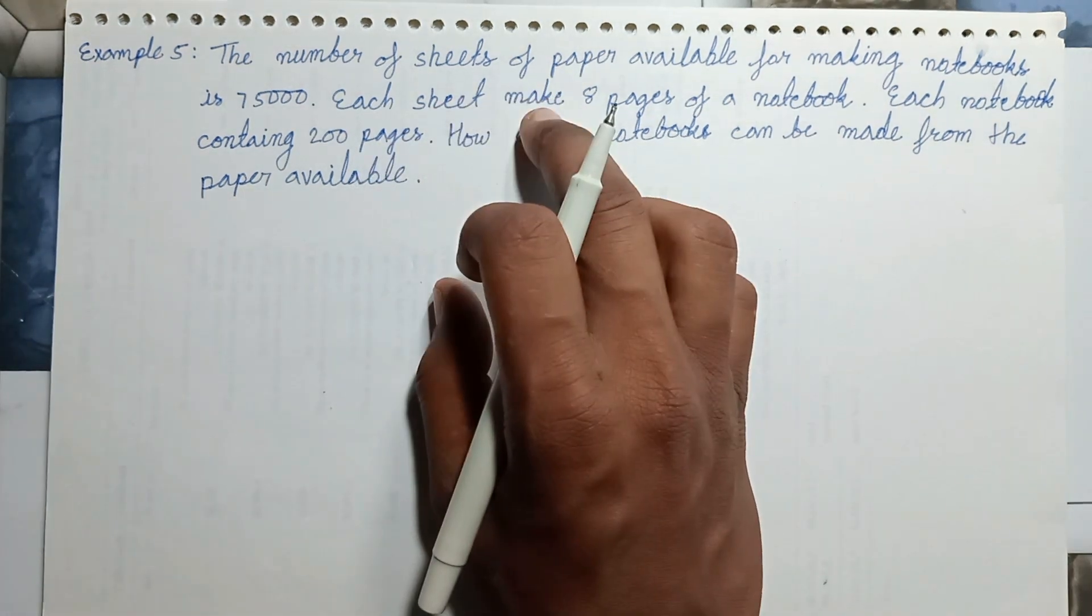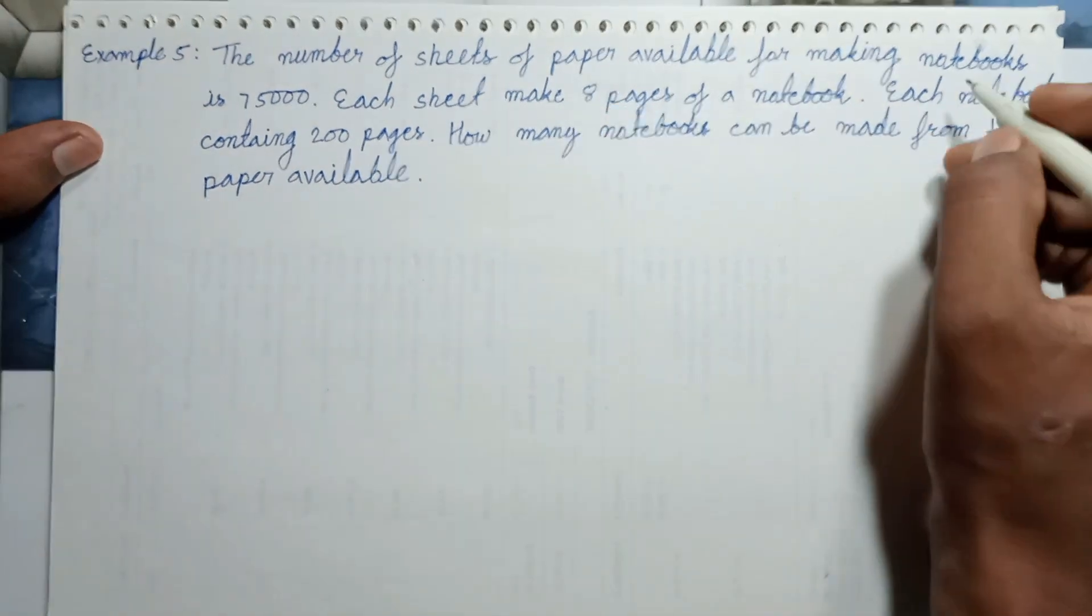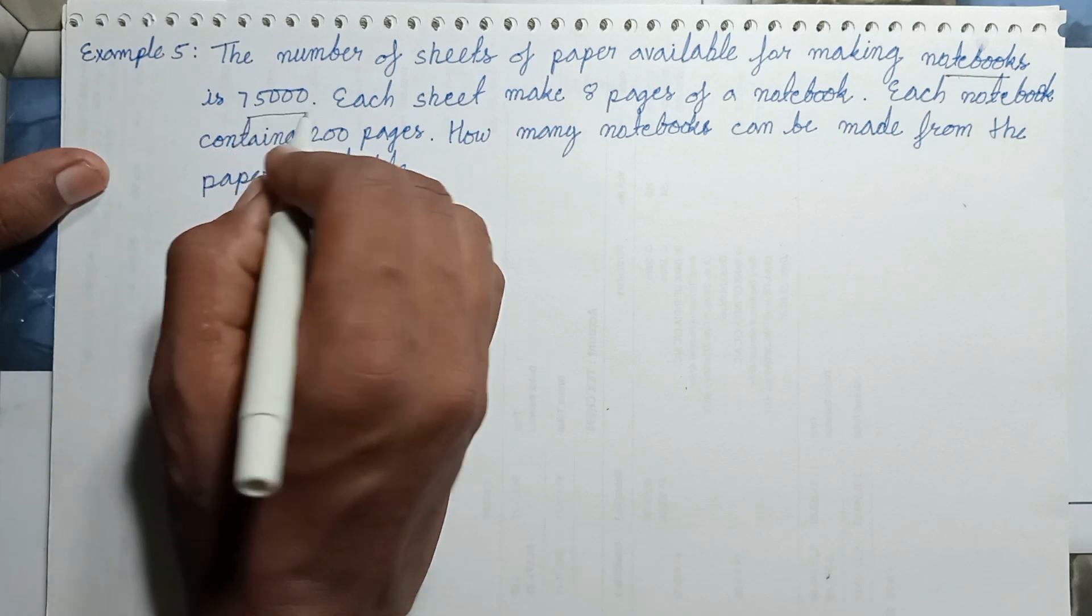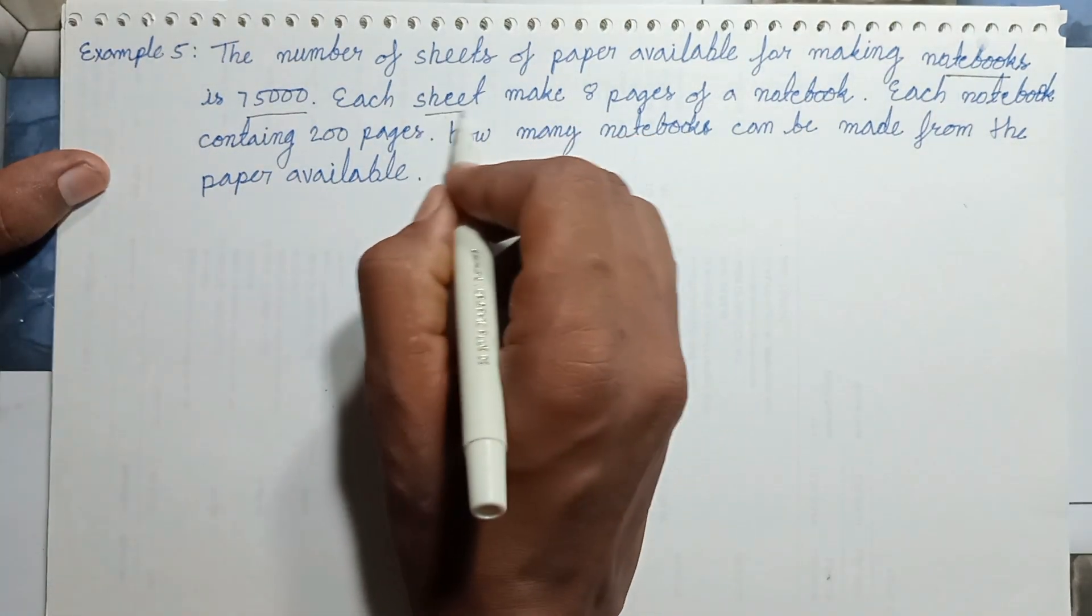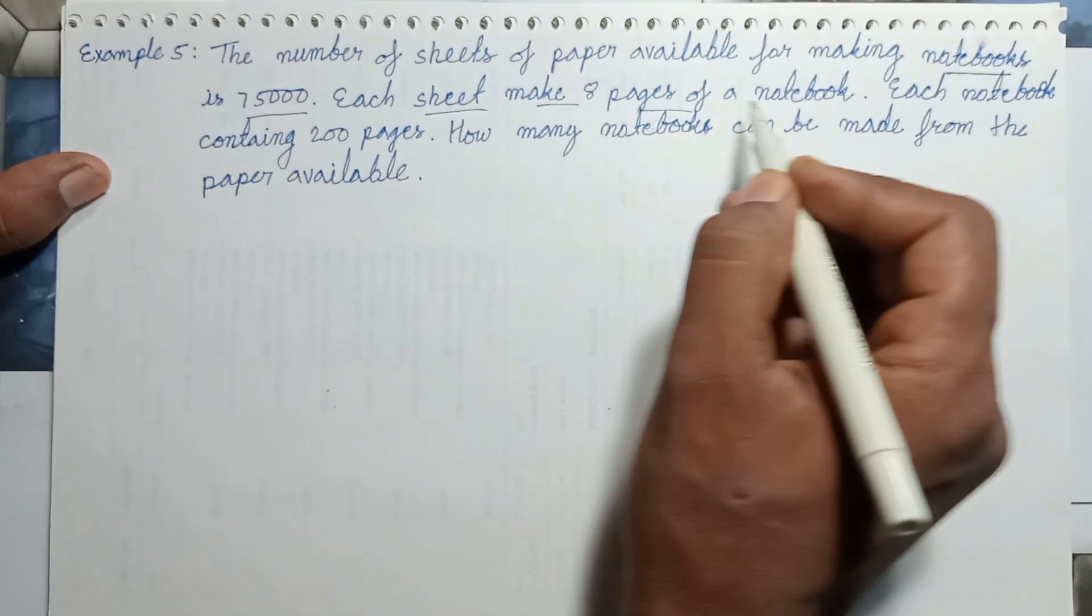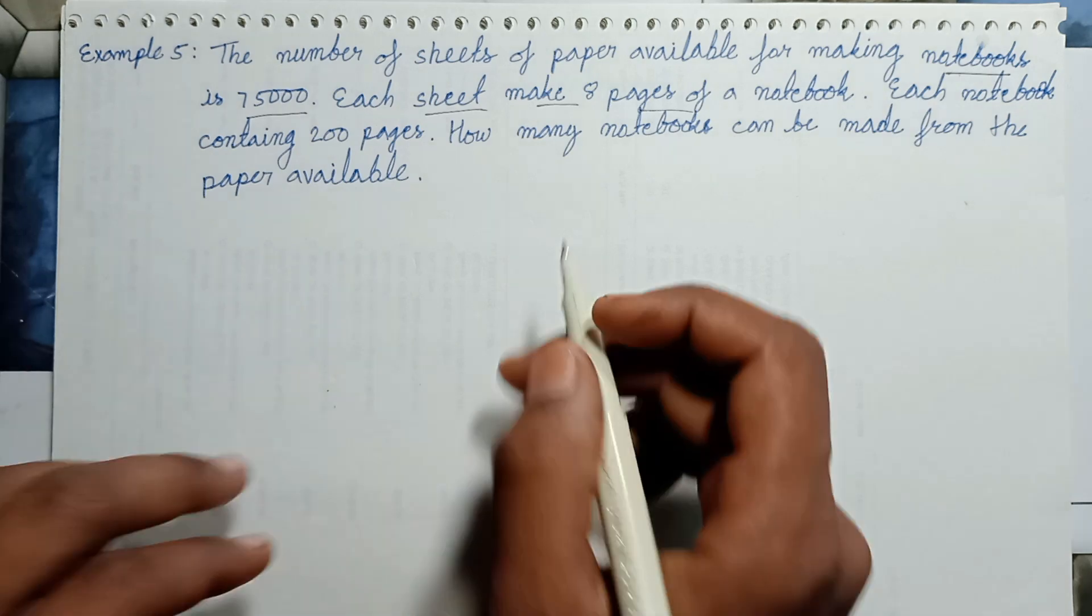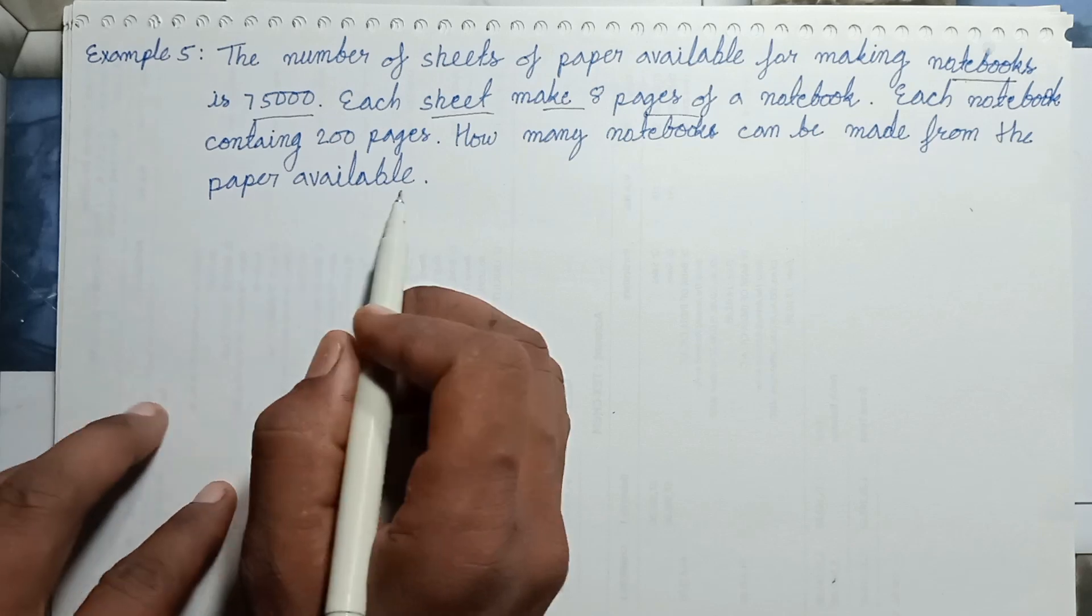The number of sheets of paper available for making notebooks is 75,000. Each sheet makes 8 pages of a notebook. Each notebook contains 200 pages. How many notebooks can be made from the paper available?